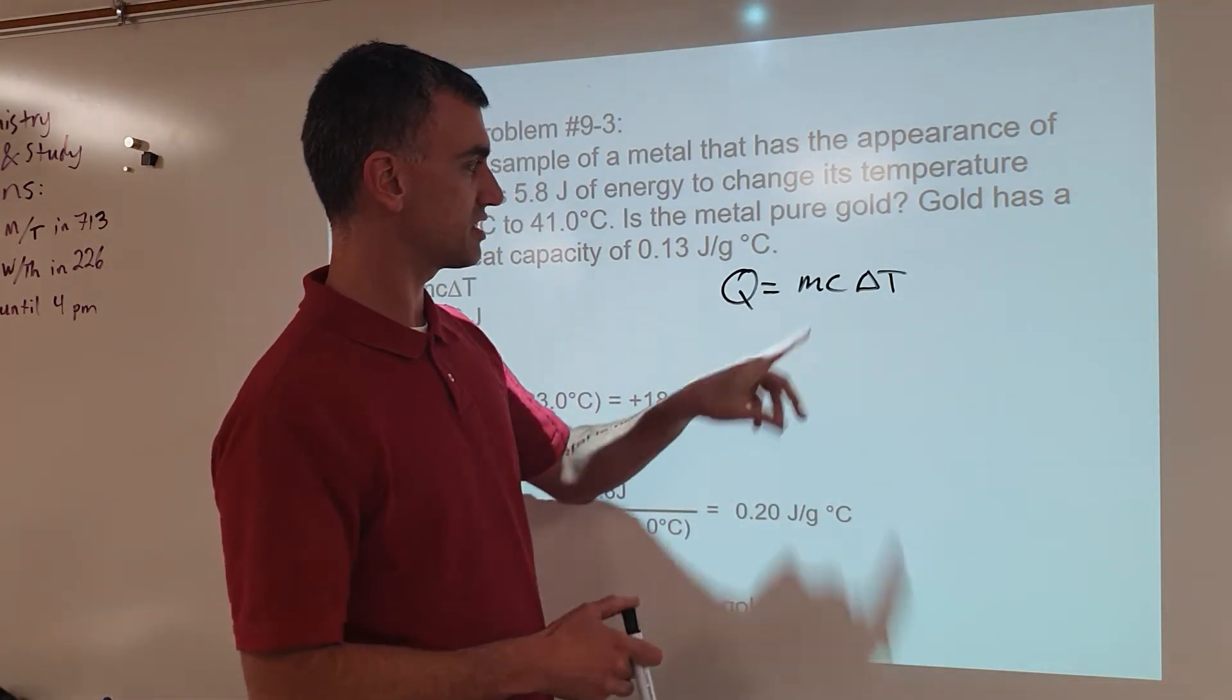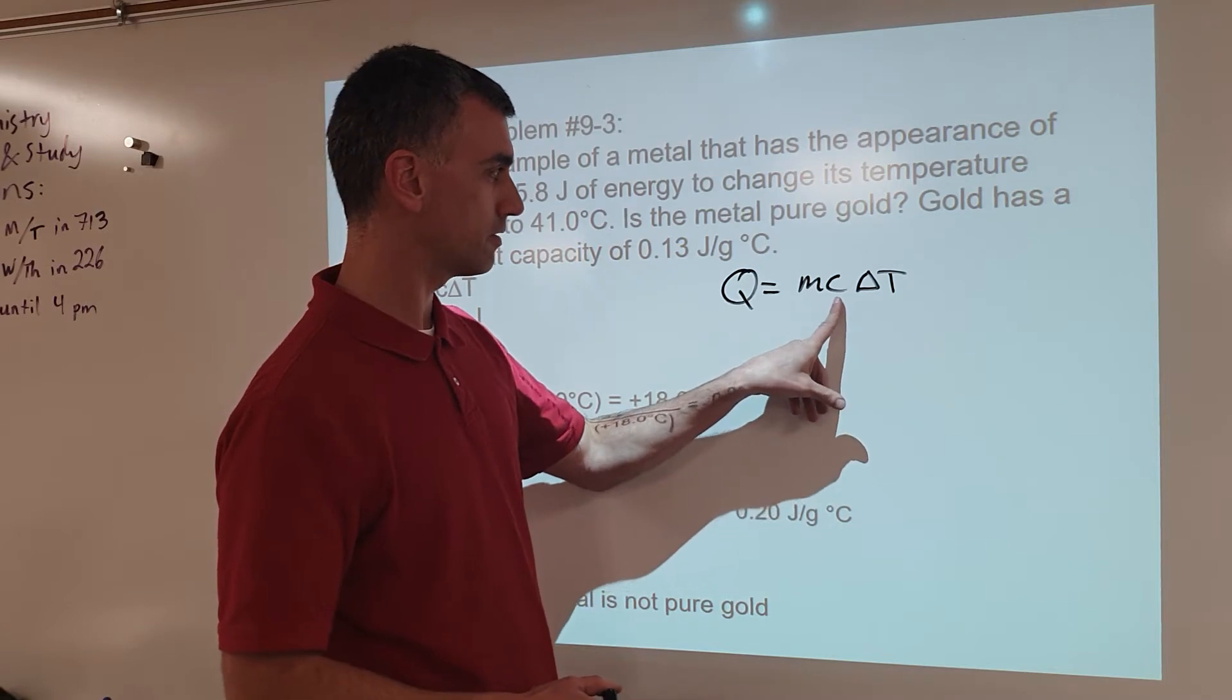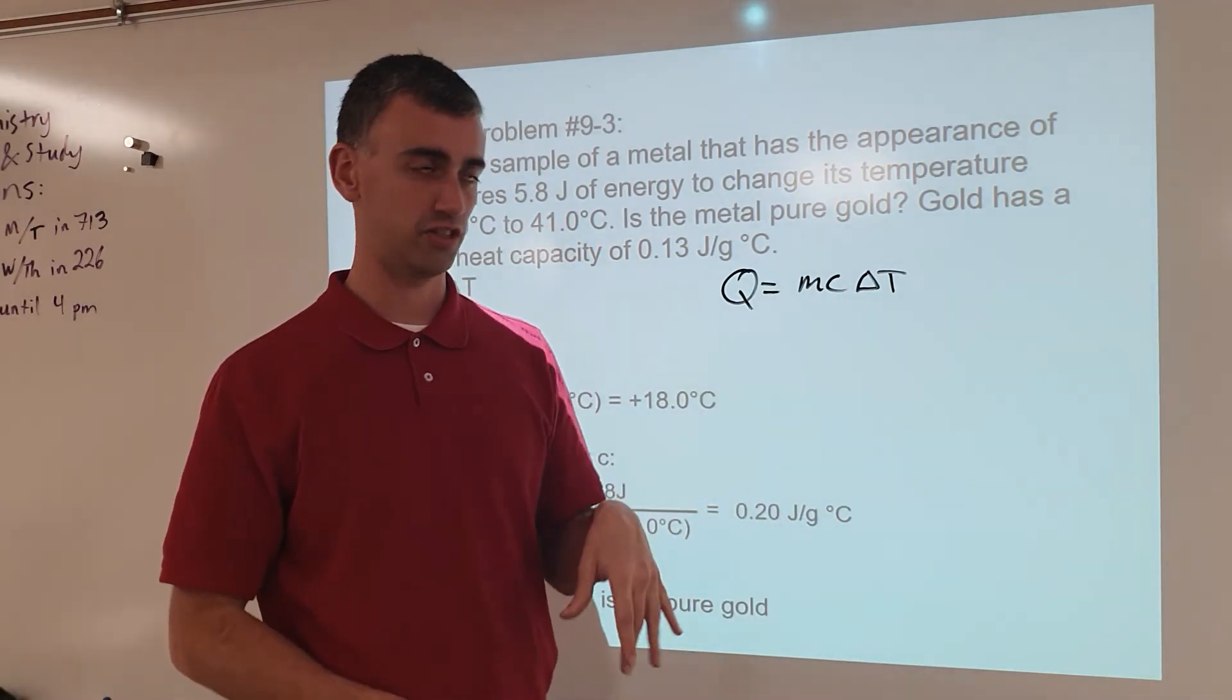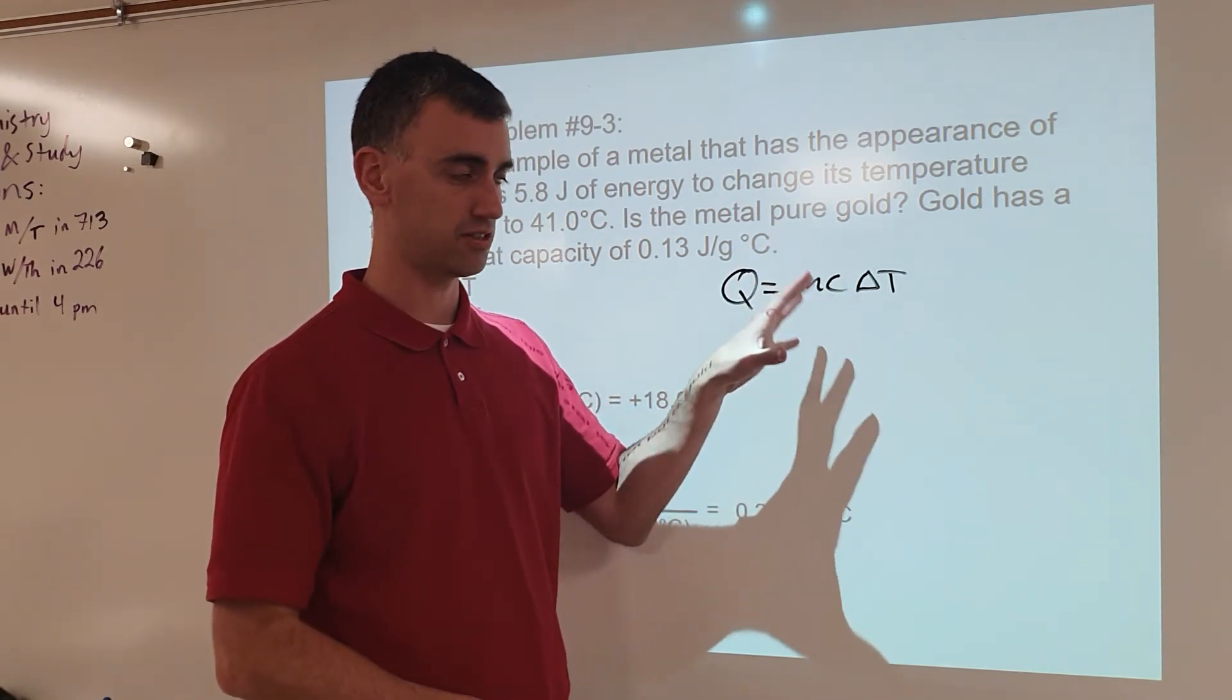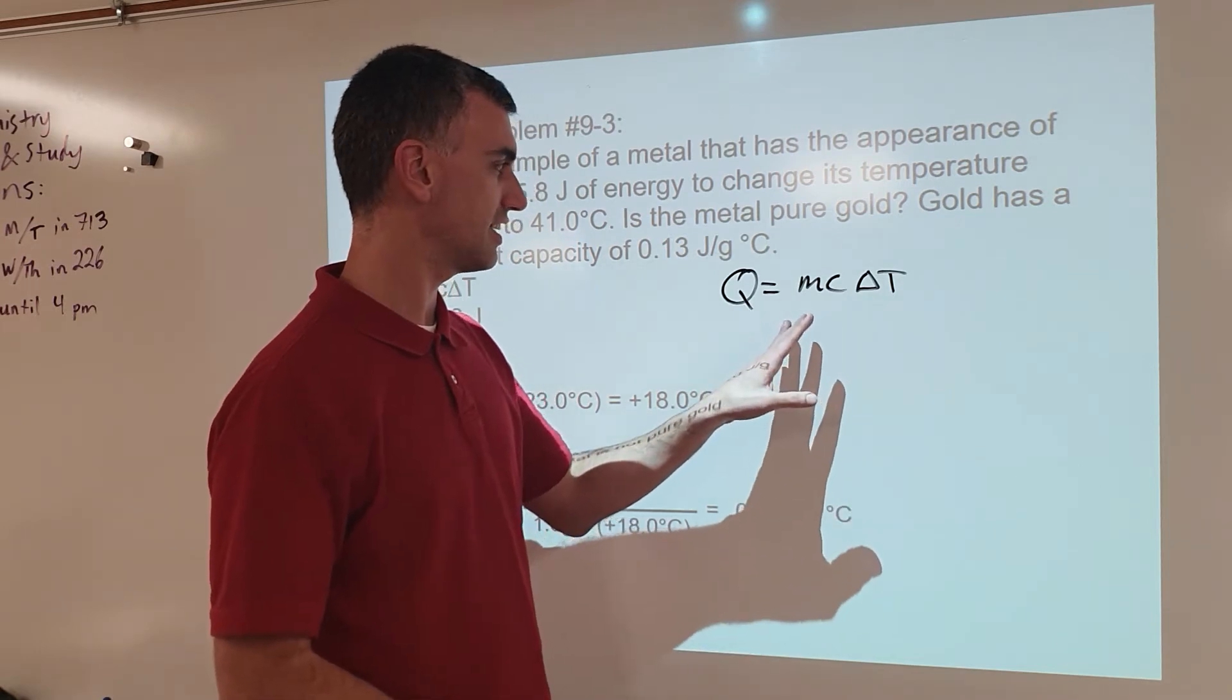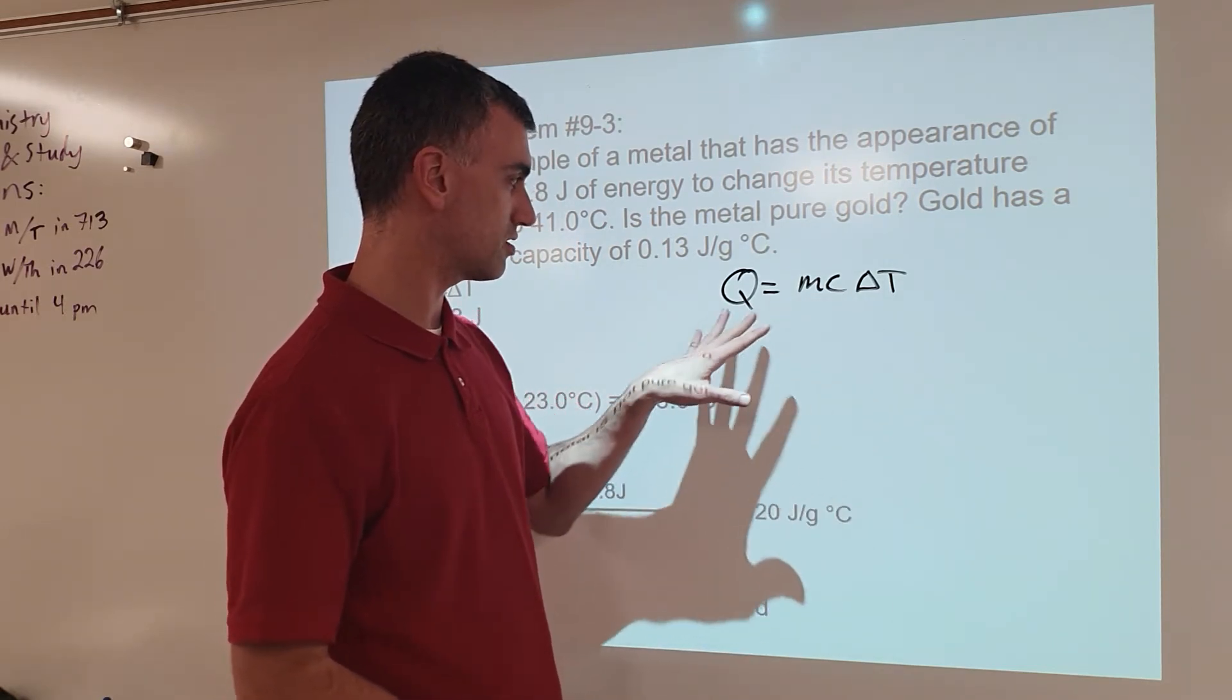So if you want to find specific heat capacity by itself, you have to move all the other variables to the other side of the equation. You can't have anything else here other than just the letter c for specific heat capacity. So whatever I do to this side, I must do to this side also.